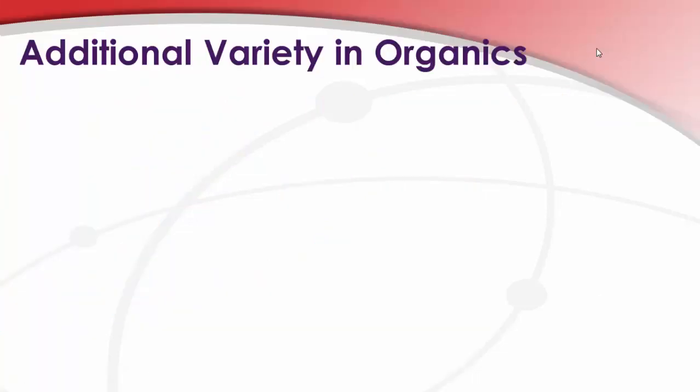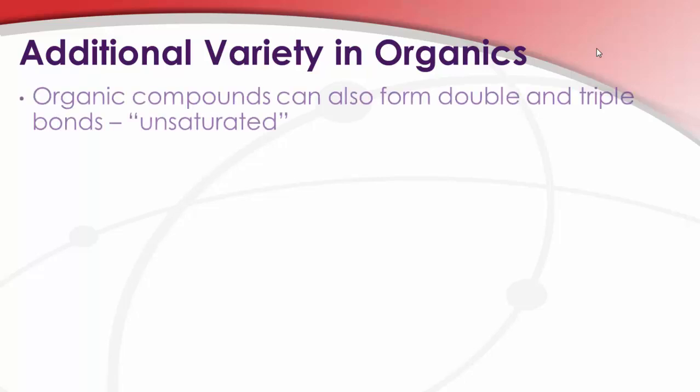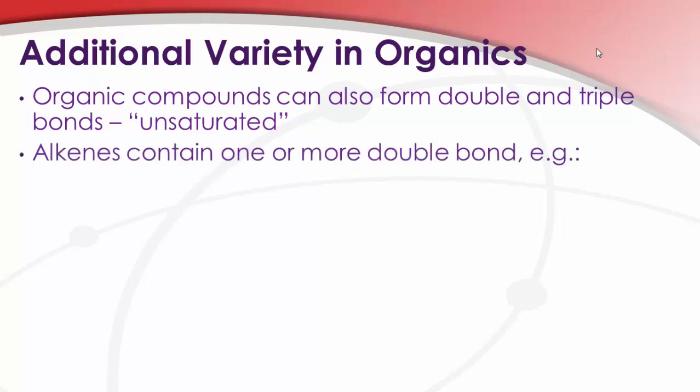Yesterday, we saw that using just two atoms, carbon and hydrogen, connected together by what we call sigma bonds, single bonds, we can construct millions of different compounds. Now, we can get additional variety, again, just with using carbon and hydrogen, by connecting the carbon atoms with double or triple bonds instead. We refer to those as unsaturated hydrocarbons because they have less hydrogen than saturated hydrocarbons.